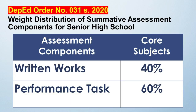Weight Distribution of Summative Assessment Component for Senior High School Core Subjects: Written Works is 40%, and Performance Tasks is 60%.